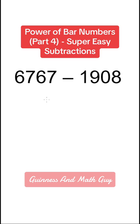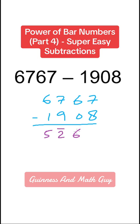Here we have 6767 minus 1908 and we go from left to right. 6 minus 1 is 5, 7 minus 9 is bar 2 and 6 minus 0 is 6, 7 minus 8 is bar 1.